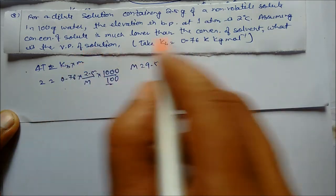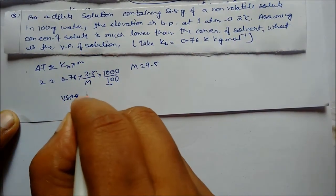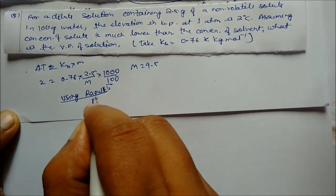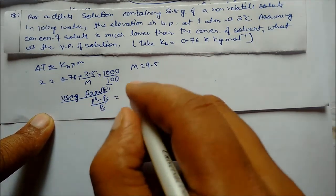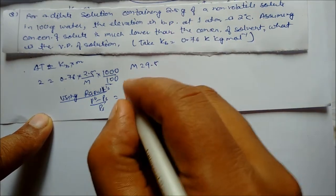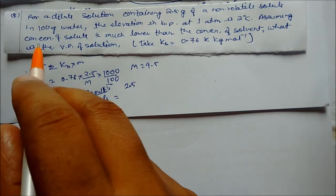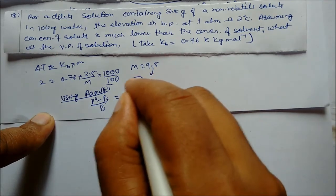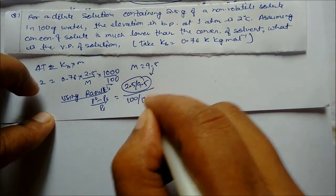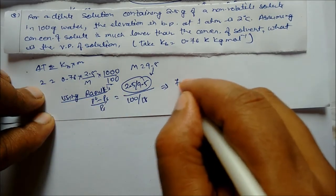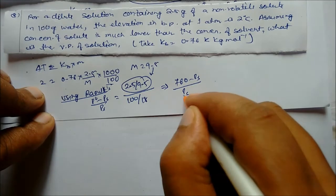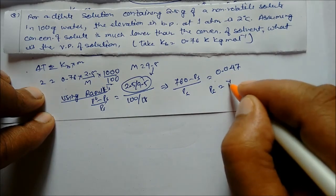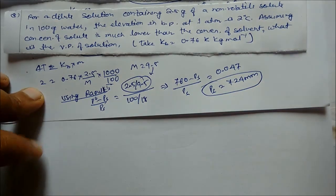Now using Raoult's law to find vapor pressure of the solution: (P° - Ps)/P° = mole fraction of solute = (2.5/9.5) / (2.5/9.5 + 100/18). With P° = 760 mmHg, solving: 760 - Ps = 0.47, giving Ps approximately 724 mmHg. This is the vapor pressure of the solution.